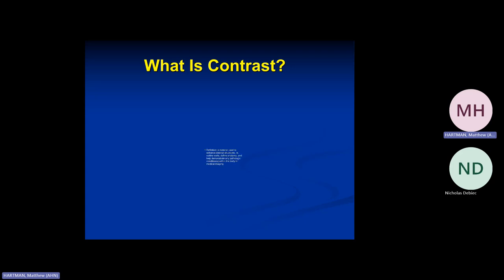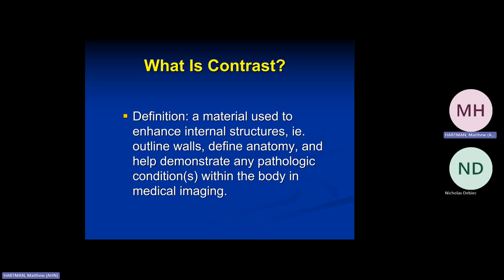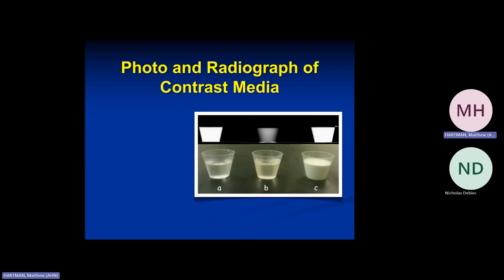Contrast is a material used to enhance internal structures, to outline walls, to find anatomy, and help us find the pathology going on within the body. These are three of the most commonly used contrast agents: gadolinium used for MRIs, water-soluble contrast which can be administered orally or intravenously, and barium which is usually administered orally or rectally.